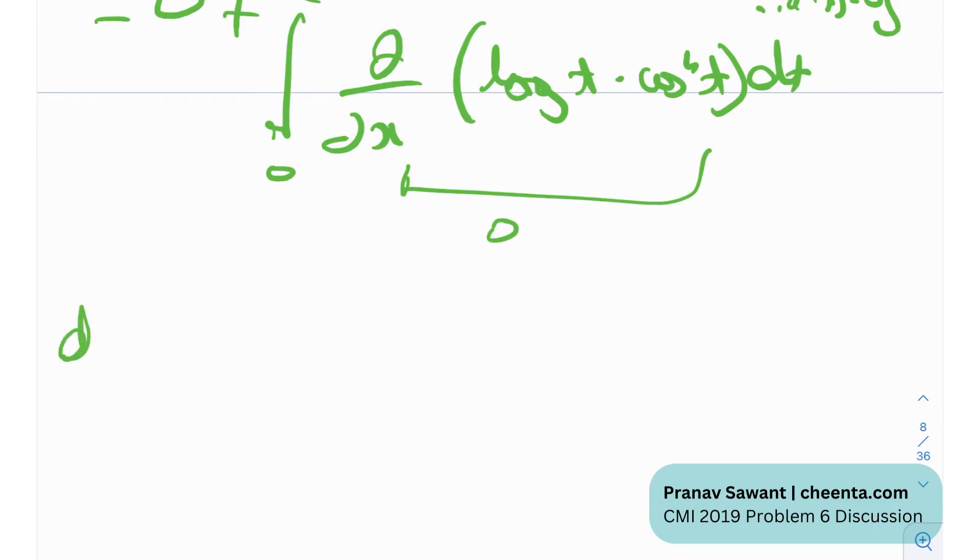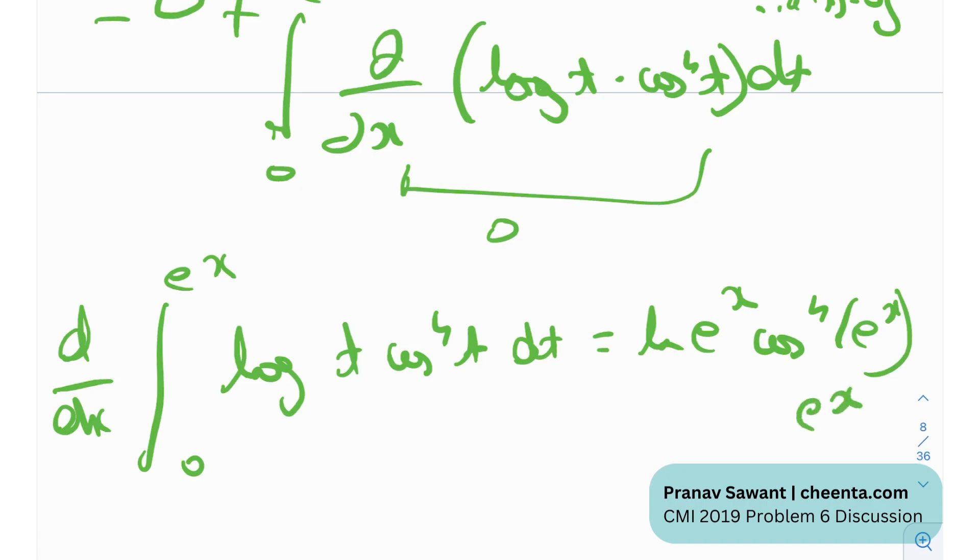what we get is the d by dx of the integral of 0 to e raised to the power x log t cosine raised to the power 4 t dt is nothing but ln times e raised to the power x cosine e raised to the power x raised to the power 4 times the derivative of e raised to the power x which is nothing but e raised to the power x.